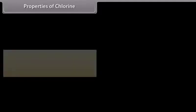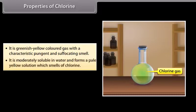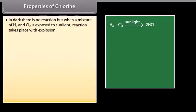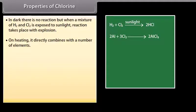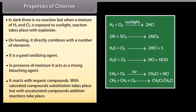Properties of chlorine: It is a greenish-yellow colored gas with a characteristic pungent and suffocating smell. It is moderately soluble in water, forming a pale yellow solution called chlorine water. In dark, there is no reaction, but when a mixture of H₂ and Cl₂ is exposed to sunlight, reaction takes place with explosion. On heating, it directly combines with a number of elements. It is a good oxidizing agent. In the presence of moisture, it acts as a strong bleaching agent. With saturated organic compounds, substitution takes place; with unsaturated compounds, addition reactions take place.